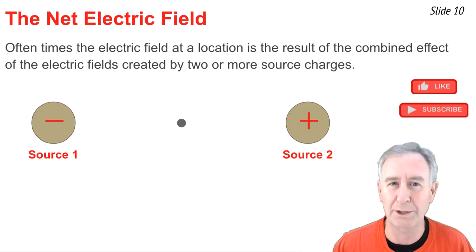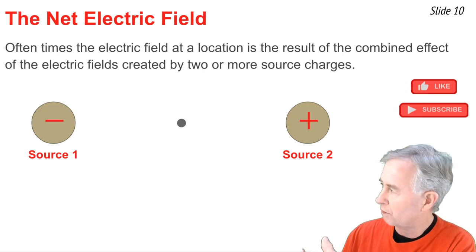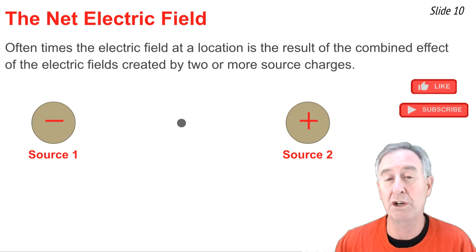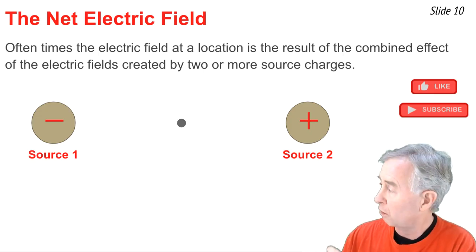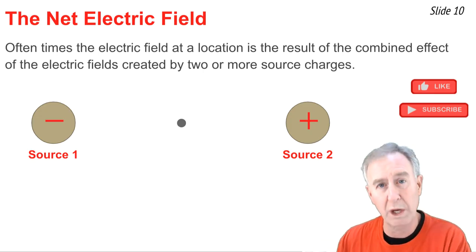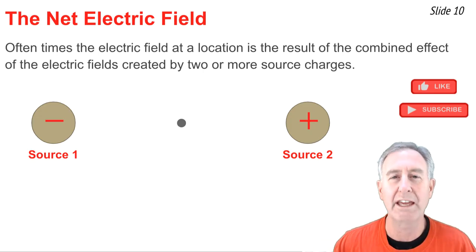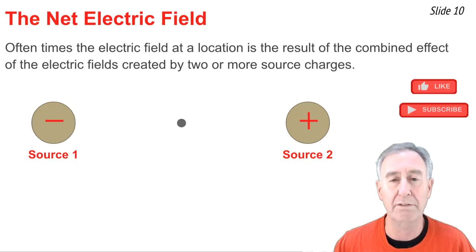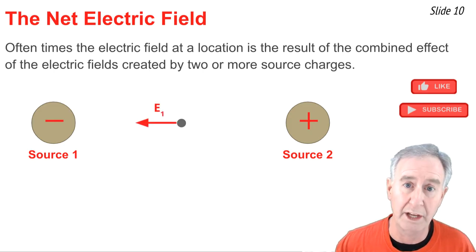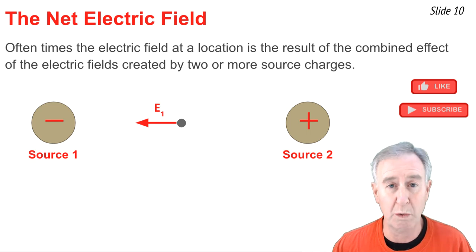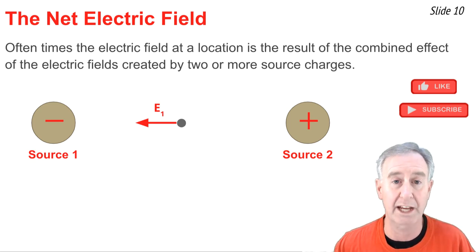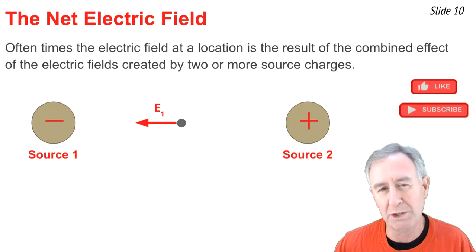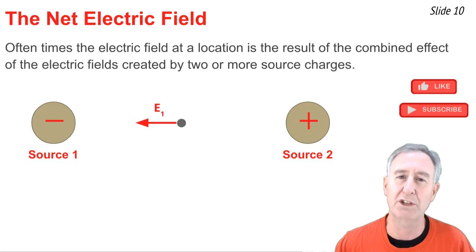Often the electric field at a given location is the combined result of the individual electric field vectors of two different source charges. Consider source 1 and source 2, and suppose we're asked to determine the electric field at a location midway between these two sources. We would first determine the electric field created by source 1 using the equation, and recognize that it is directed towards source 1 since source 1 is negatively charged.